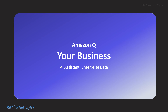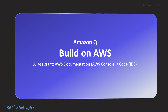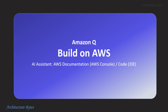Amazon Q for Business can be tailored to your business by connecting it to your enterprise data. Amazon Q for building on AWS is available wherever you work with AWS, like the AWS Console and IDE. It acts as an expert on AWS documentation, best practices, and so on, answering questions related to AWS services.